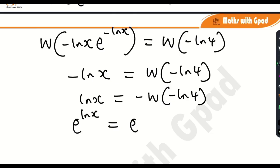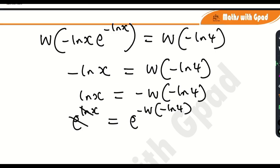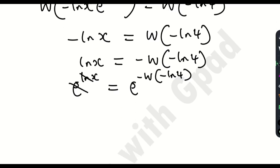So ln cancels the e function and then you just have x which is equal to e minus W bracket minus ln 4.